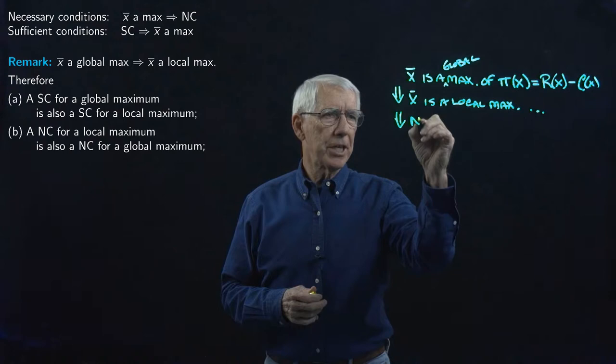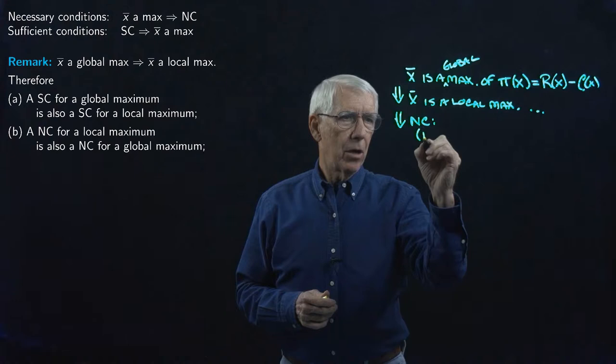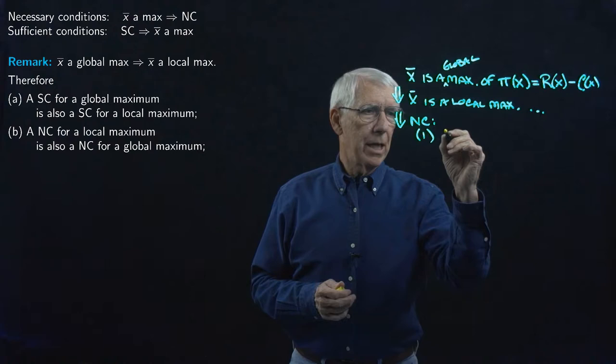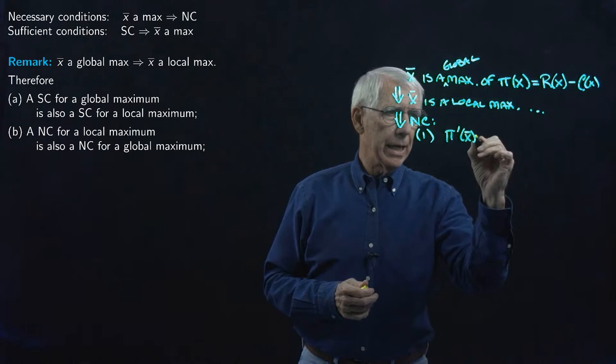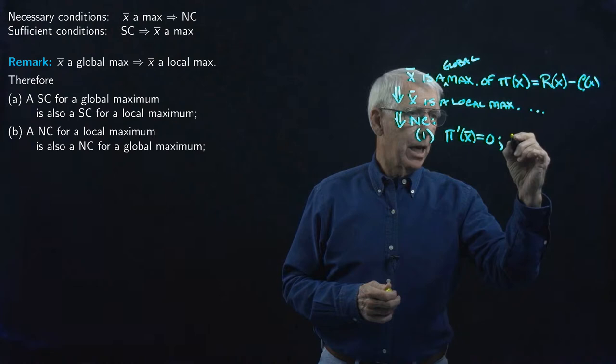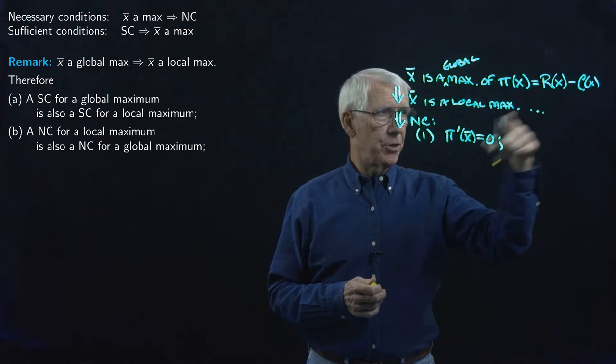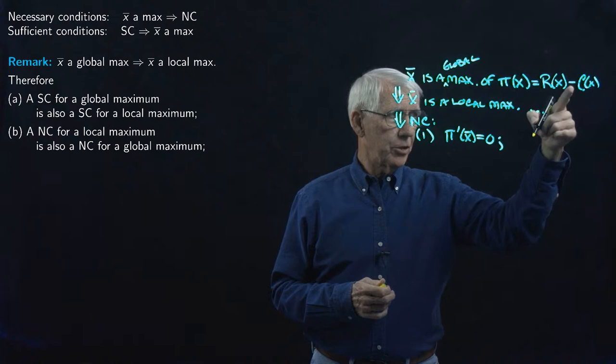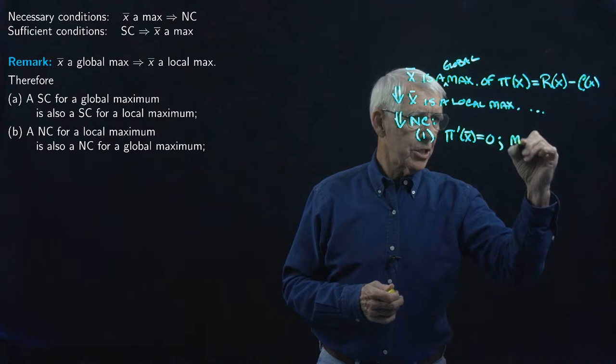That implies the necessary conditions for being a local maximum. The first-order necessary condition is that pi-prime at x-bar equals zero. That's the same as saying that the derivative of the revenue function minus the derivative of the cost function equals zero, which says marginal revenue equals marginal cost.